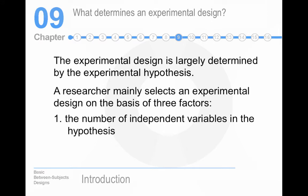It's determined by the experimental hypothesis or the research question. How do we determine what our experimental design is? Well, really three factors. The first is the number of independent variables in the hypothesis. In general, the more independent variables that we have, the more participants we need, and the more difficult it is to simultaneously manipulate multiple independent variables.